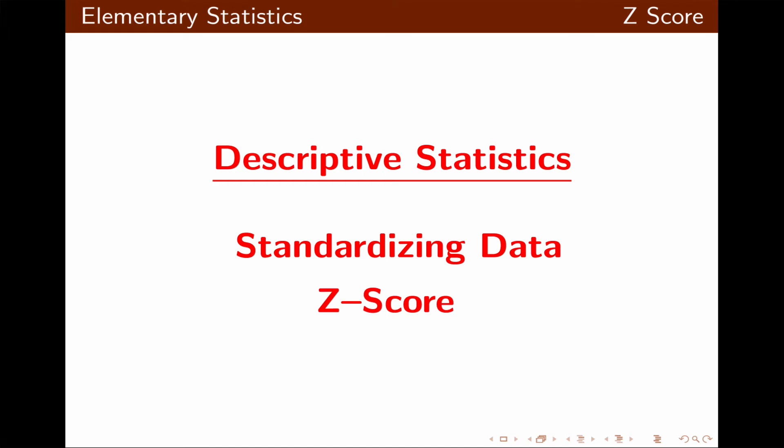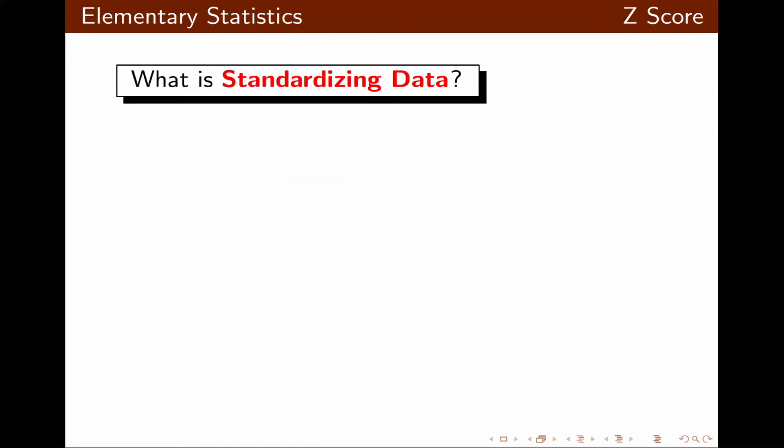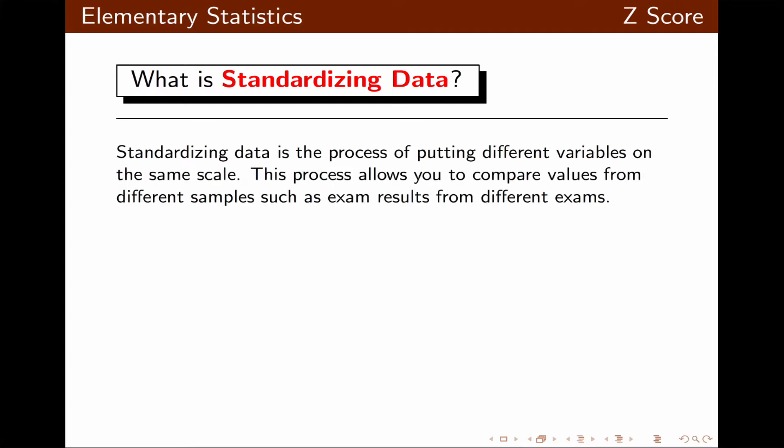In this video lecture, we're going to look at another application of descriptive statistics called standardizing data, also known as z-score. Standardizing data is a process of putting different variables on the same scale. The process allows you to compare values from different samples, such as exams from different classes.